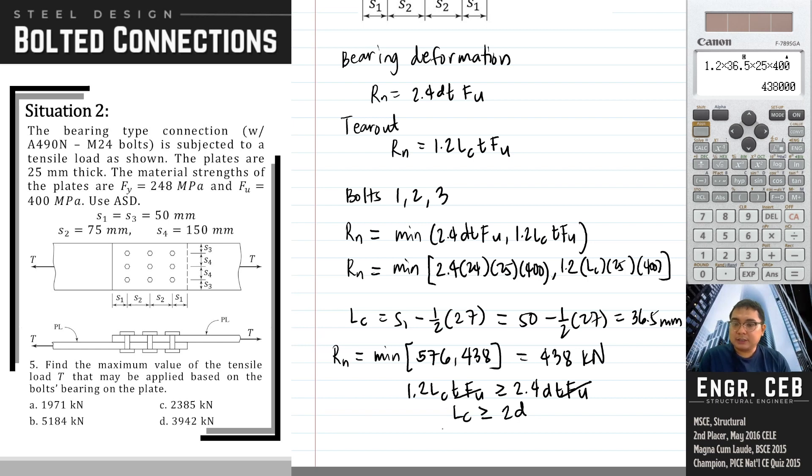We just have to check if LCT is greater than 2D. Like in this case, the value of LCT is 36.5 and then twice of the D is 48. As you can see, 36.5 is not greater than 48 mm, so meaning, the tear-out formula will govern. So for bolts 1, 2, and 3, the nominal strength is 438.